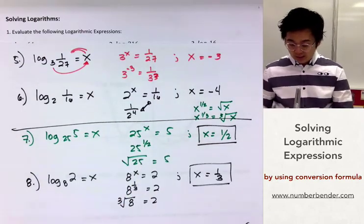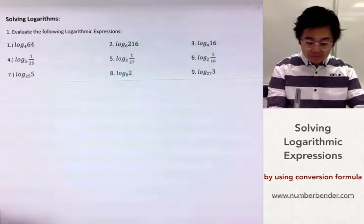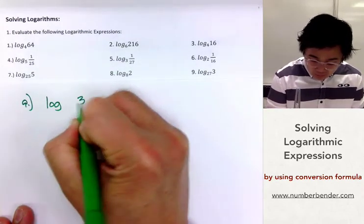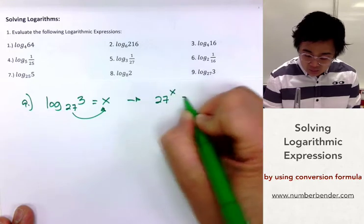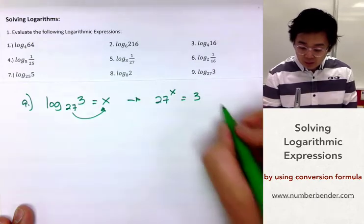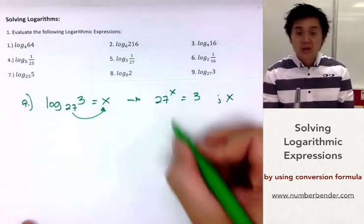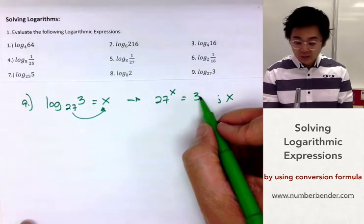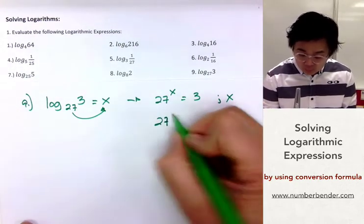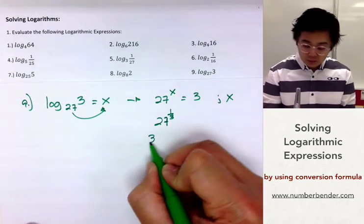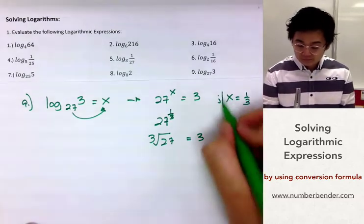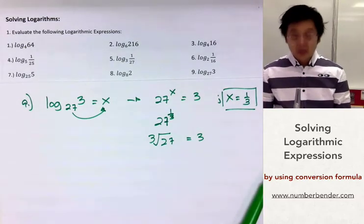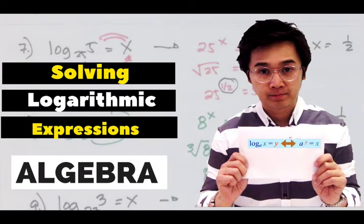We have 1 half for number 7 and 1 third for number 8 — both fractions because we're making the number smaller given a larger base. For problem number 9: logarithm of 3, base 27, equated to x gives us 27 raised to x equal to 3. Since 3 raised to 3 is 27, our exponent will be 1 over 3, because the cube root of 27 equals 3. So x equals 1 third. And this is how we evaluate logarithms.